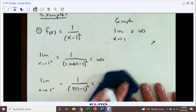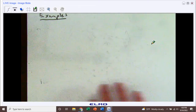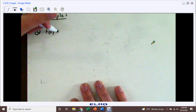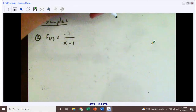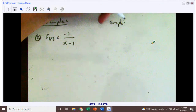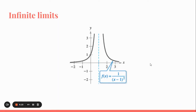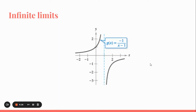Let's take a look at example two. This function g of x is going to be equal to negative 1 over x minus 1. Looking at the graph, at x equals 1 there's an asymptote again. But this time, approaching from the left-hand side we are approaching positive infinity, while from the right-hand side we see it moving down towards negative infinity. So we're going to have to bring in one-sided limits and answer the question in two parts.